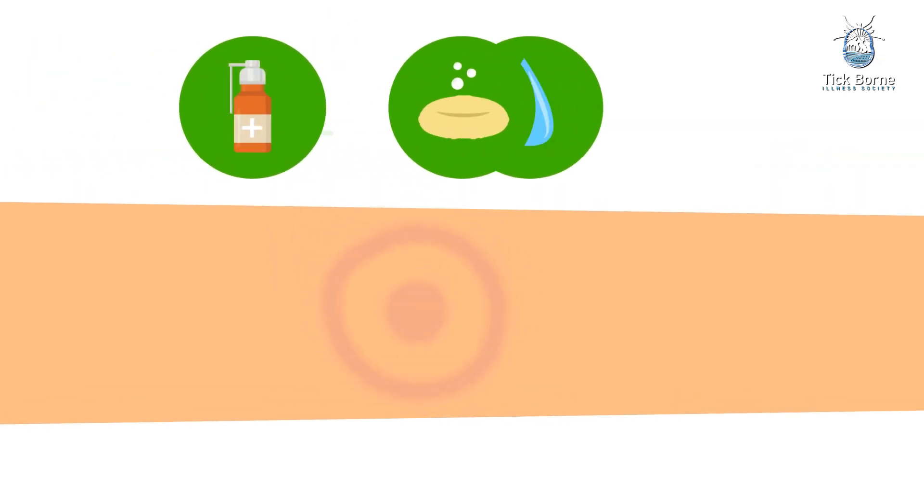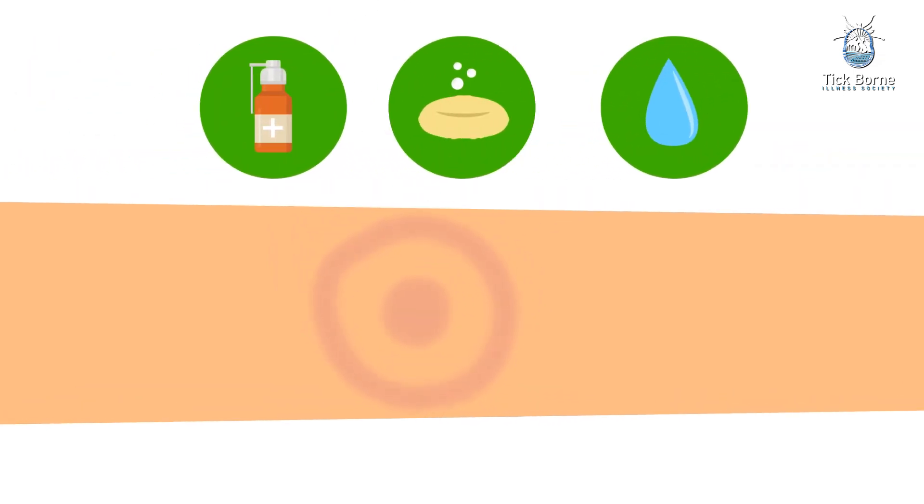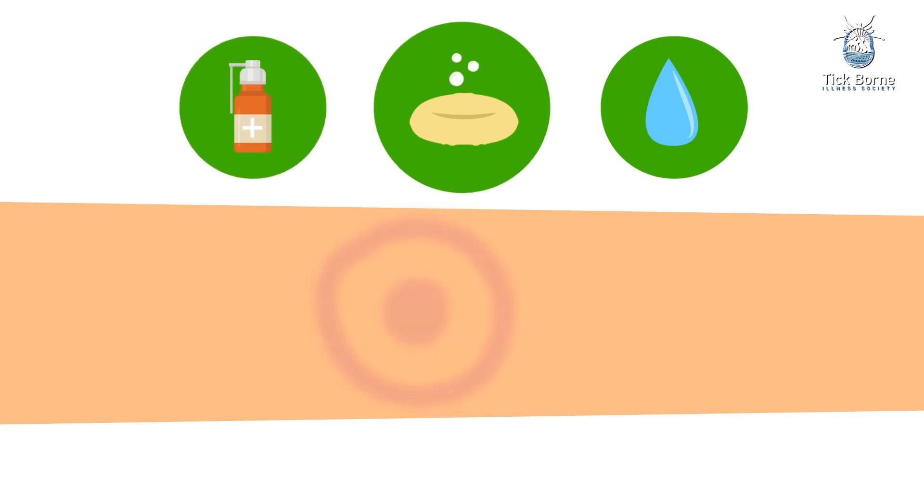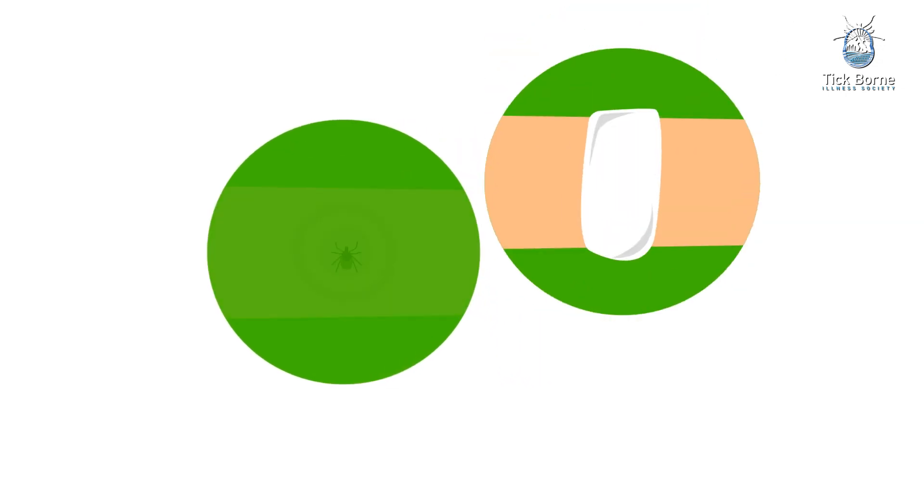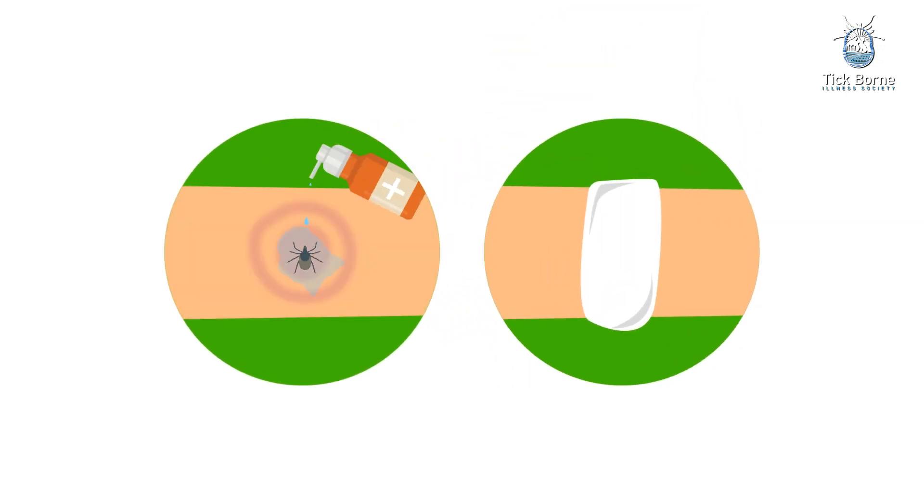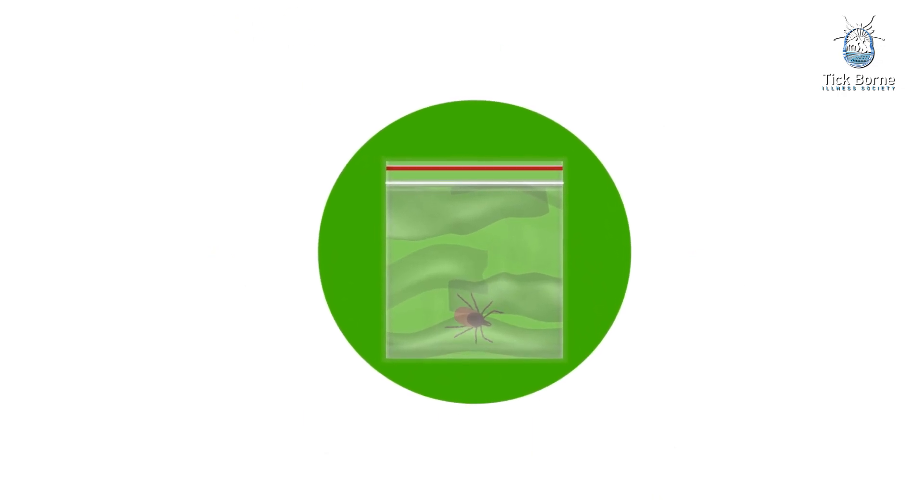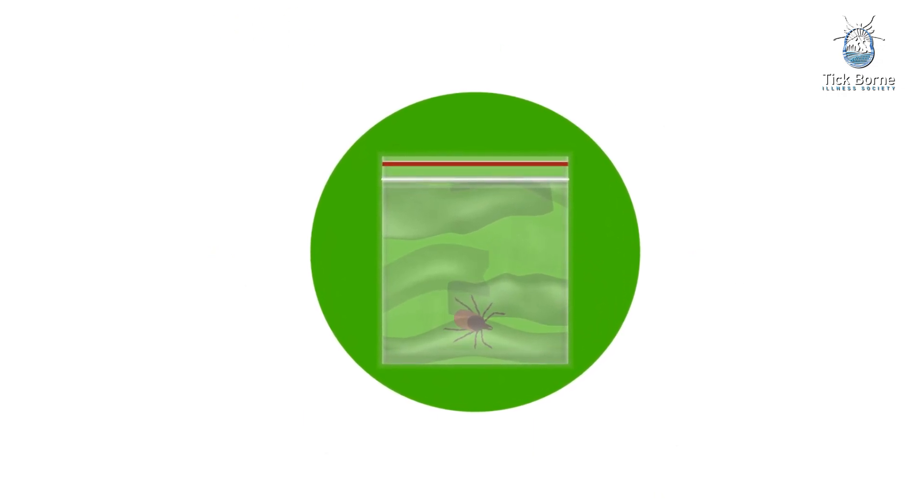After removing the tick, thoroughly clean the bite area and your hands with rubbing alcohol or soap and water. Never crush a tick with your fingers. Dispose of a live tick by putting it in alcohol or wrapping it tightly in tape. Saving it in a sealed bag or container will allow the possibility of testing it.